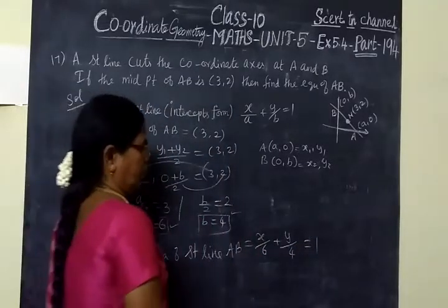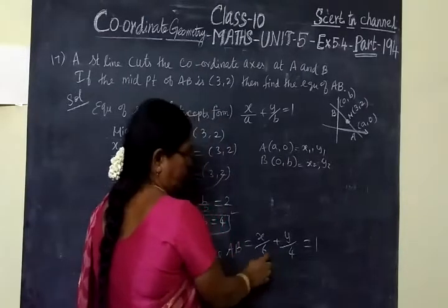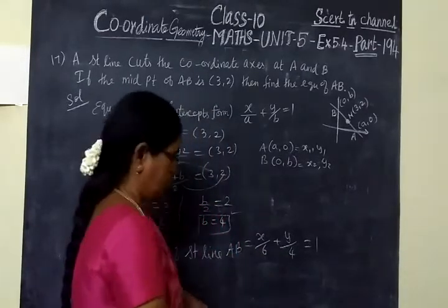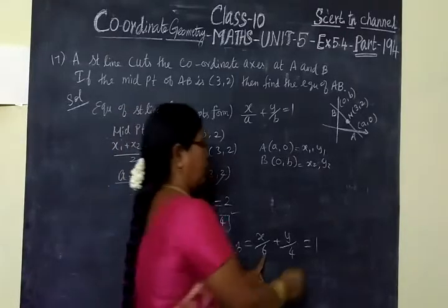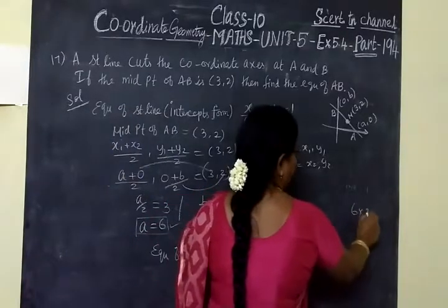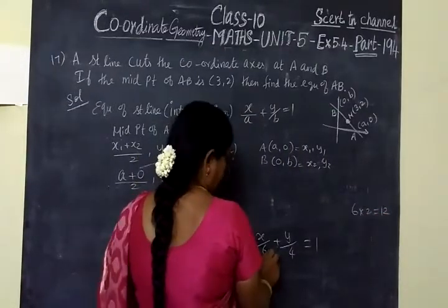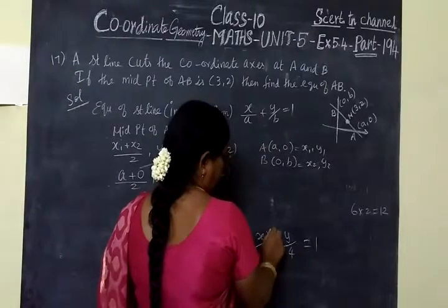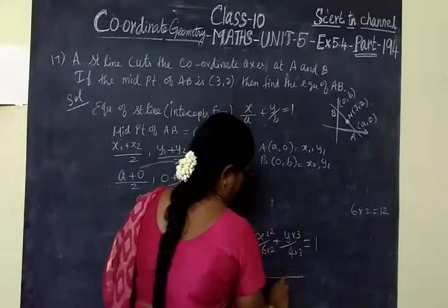Now we want to find the LCM. LCM of 6 and 4 is 12. Multiplying through: this is into 2, this is into 3. So 2X plus 3Y equal to 12.